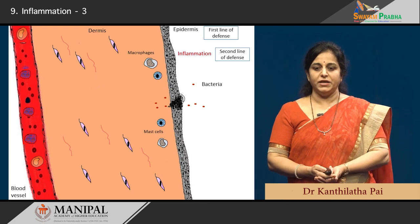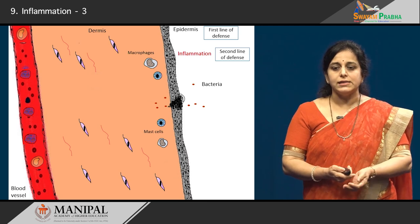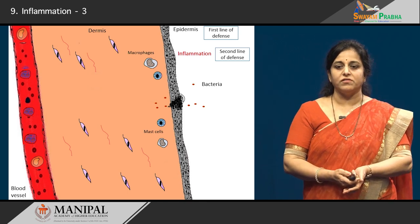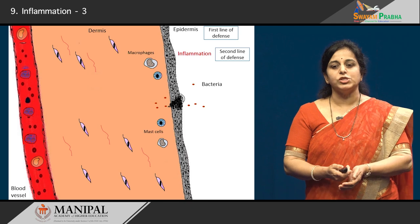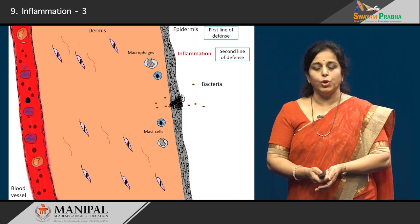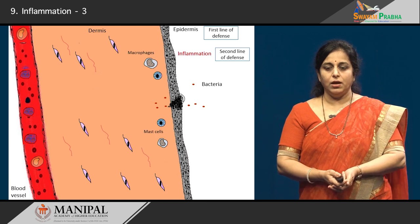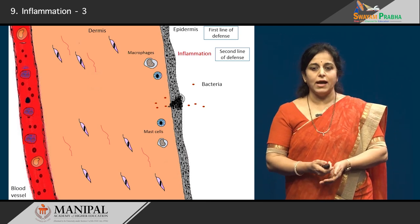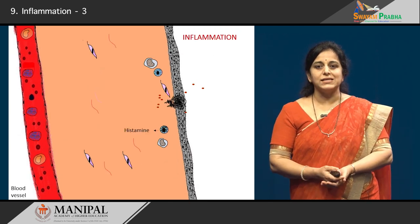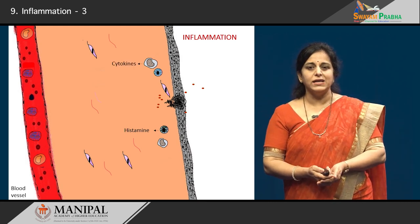Now what happens in inflammation? Whenever there is entry of bacteria and there is dead tissue, there are cells in our tissue which are the first responders. Although WBCs reside within the circulatory system, some WBCs are present in the tissue. Some monocytes exit the circulation and lie in the tissue — these are called macrophages. There are also some mast cells in the tissues. These recognize that something foreign has entered the body, so the mast cells release a chemical called histamine.